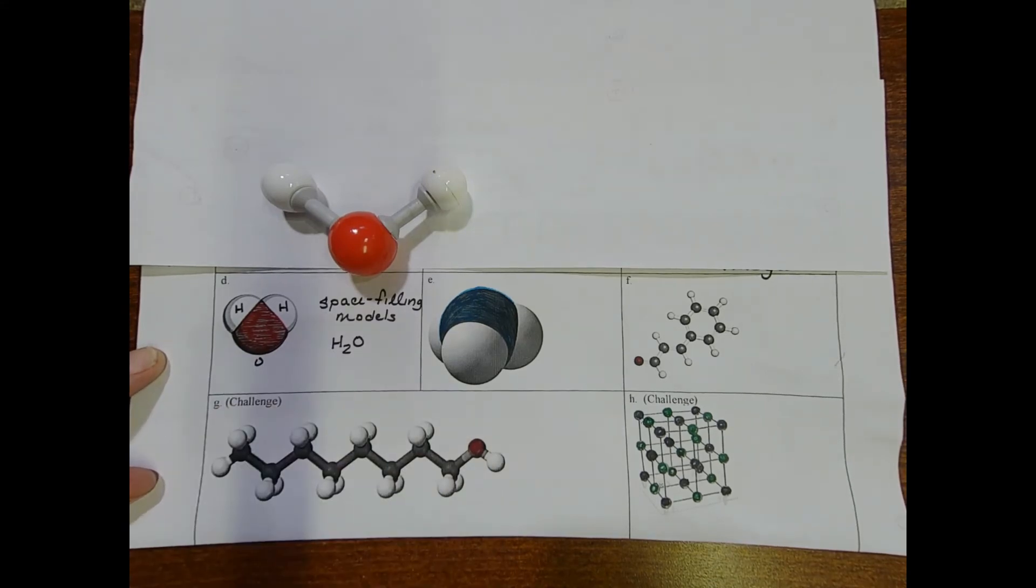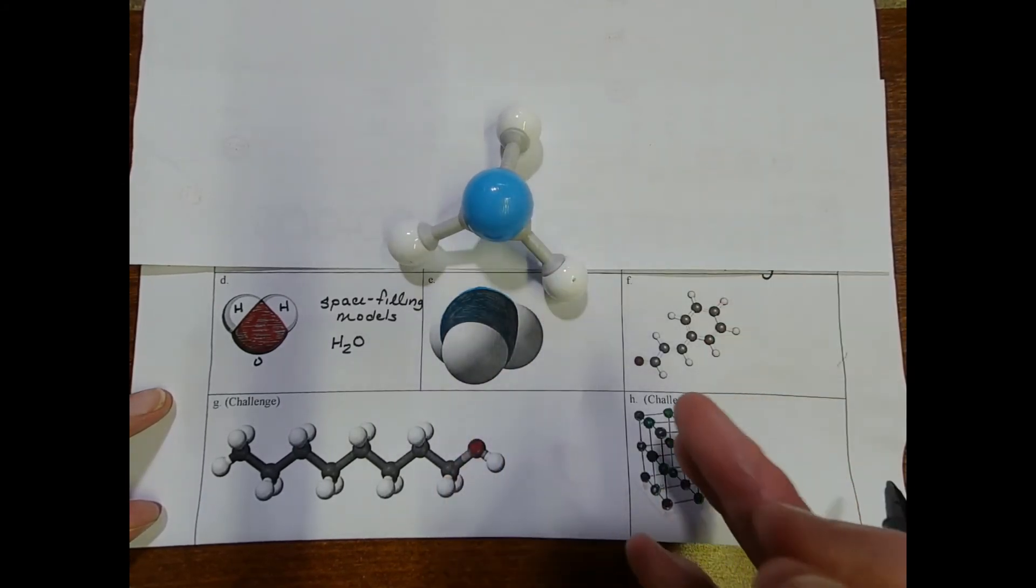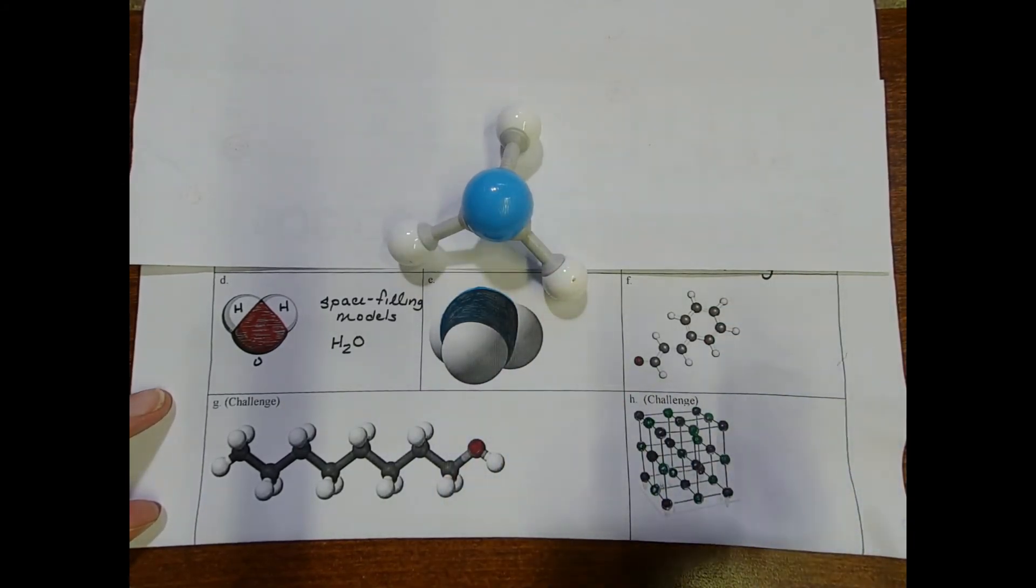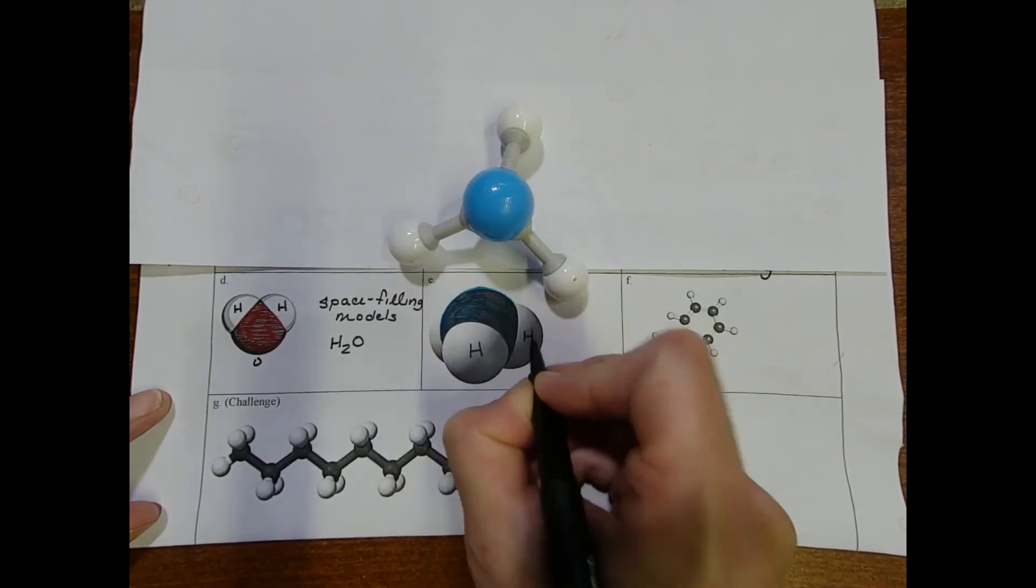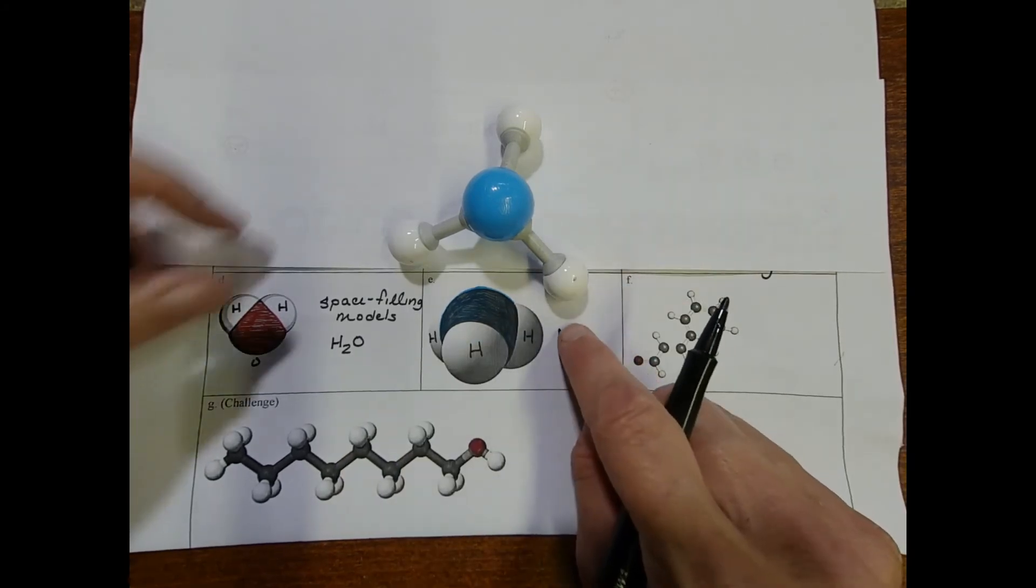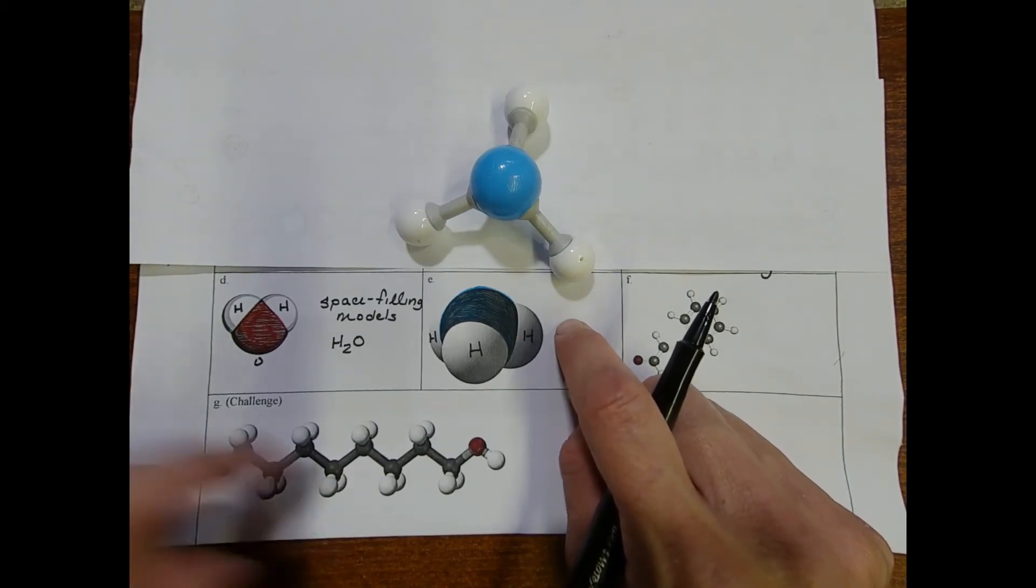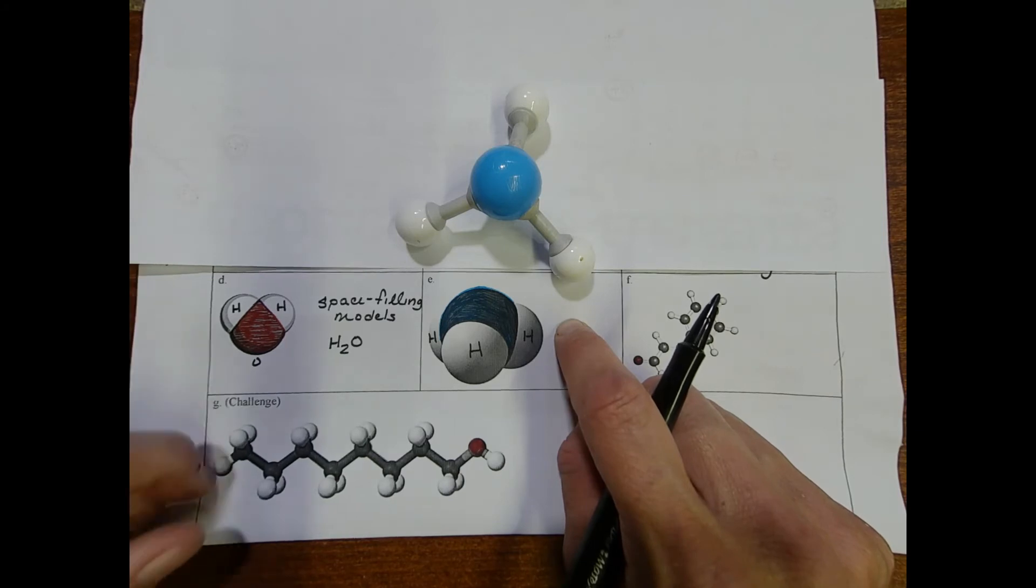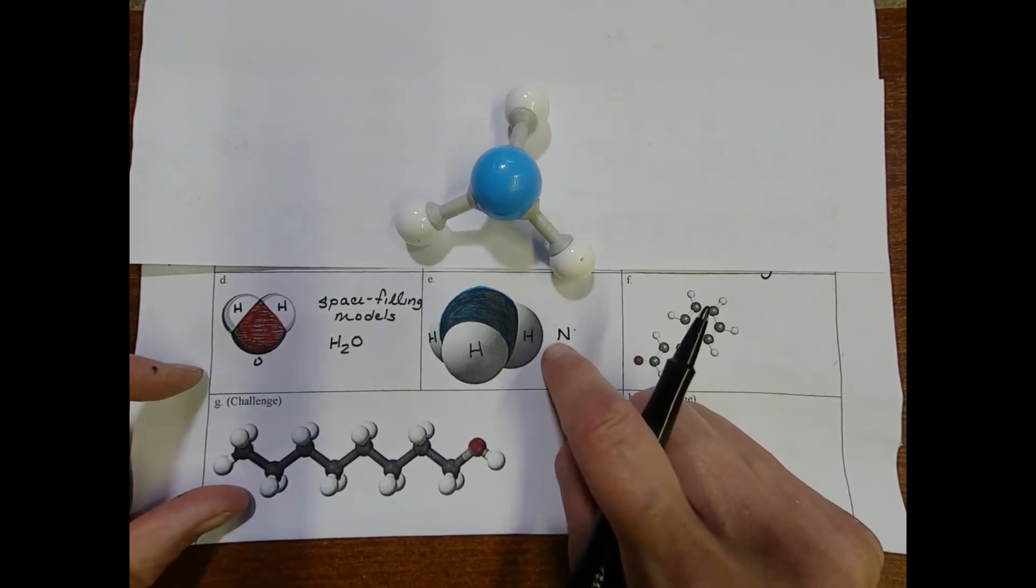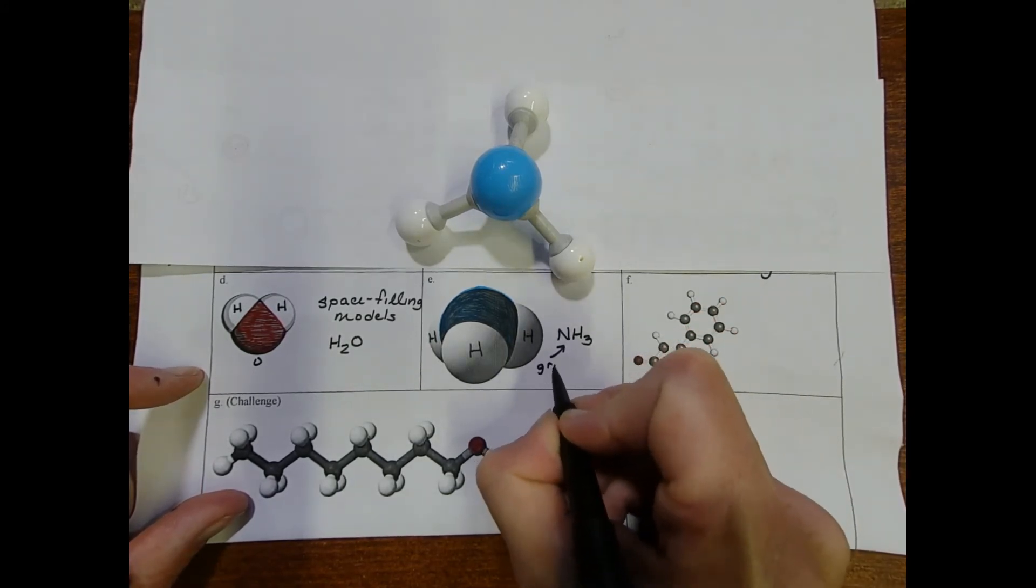So blue in the molecular modeling kits, a lot of times, is associated with nitrogen. And then we have three hydrogen atoms as well. All the white ones are hydrogen. So normally, I would read from left to right on my periodic table and write H, N. But since nitrogen is in group 5, we need to write the hydrogen after the nitrogen. So I'm going to do NH3. And that's because the nitrogen is in group 5A.